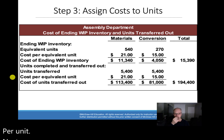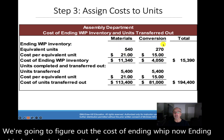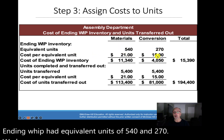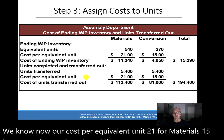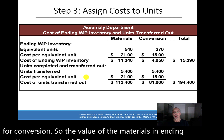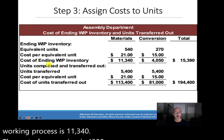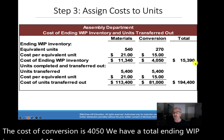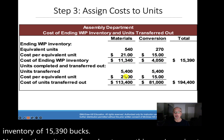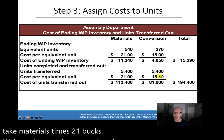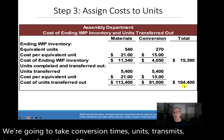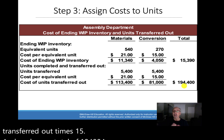Next, we figure out the cost of ending WIP. Ending WIP had 540 equivalent units for materials and 270 for conversion. At $21 per unit for materials, that's $11,340; at $15 for conversion, that's $4,050 — giving a total ending WIP inventory of $15,390. For units transferred out, materials cost is 5,400 × $21 and conversion is 5,400 × $15, for a total of $194,400 transferred out to the next department.